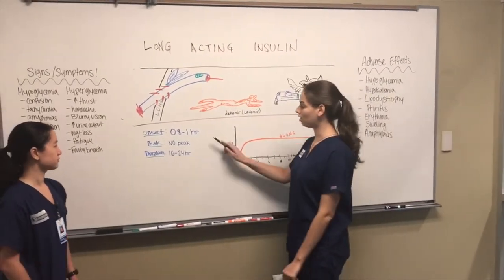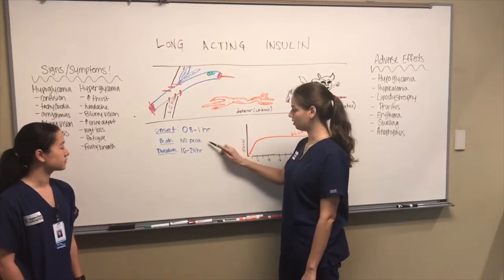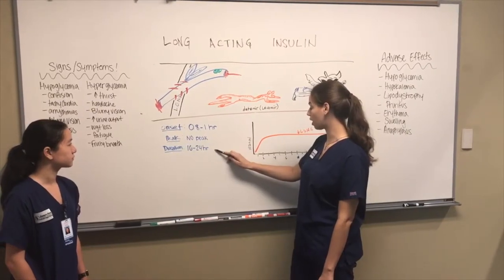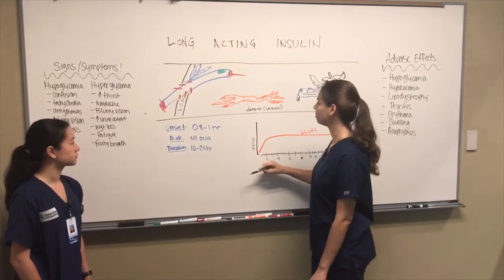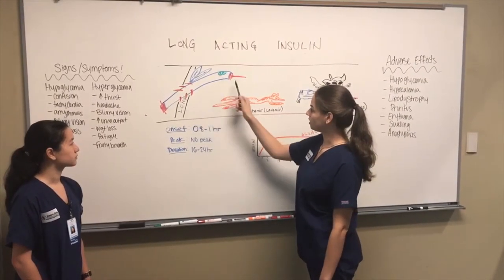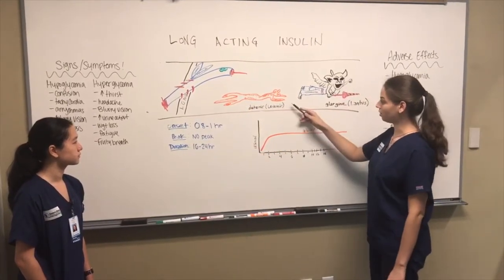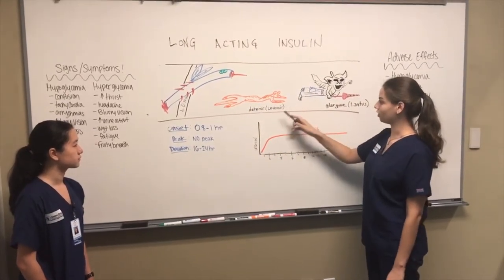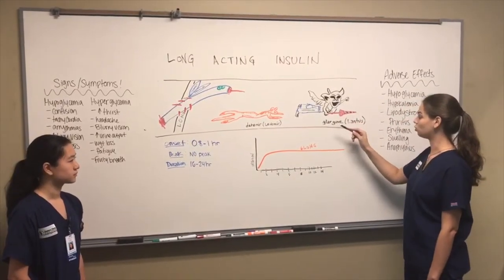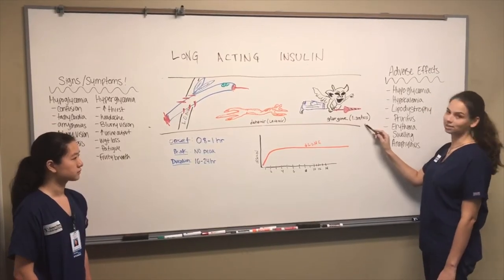The onset is 0.8 to 1 hour. There is no peak. The duration is 16 to 24 hours. We have a long insect to represent the long-acting insulin, a dead meerkat for detemir, and a gargoyle in jeans with a lance for glargine and lances.